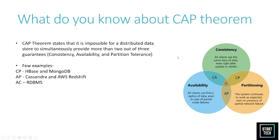Partitioning means the system continues to work as expected even in the presence of partial network failure. The CAP theorem states that it is not possible to distribute data with all three of these guarantees — only two can be guaranteed. For example, in RDBMS you can have availability and consistency; in HBase and MongoDB you can have consistency and partitioning; in Cassandra you can have availability and partitioning.